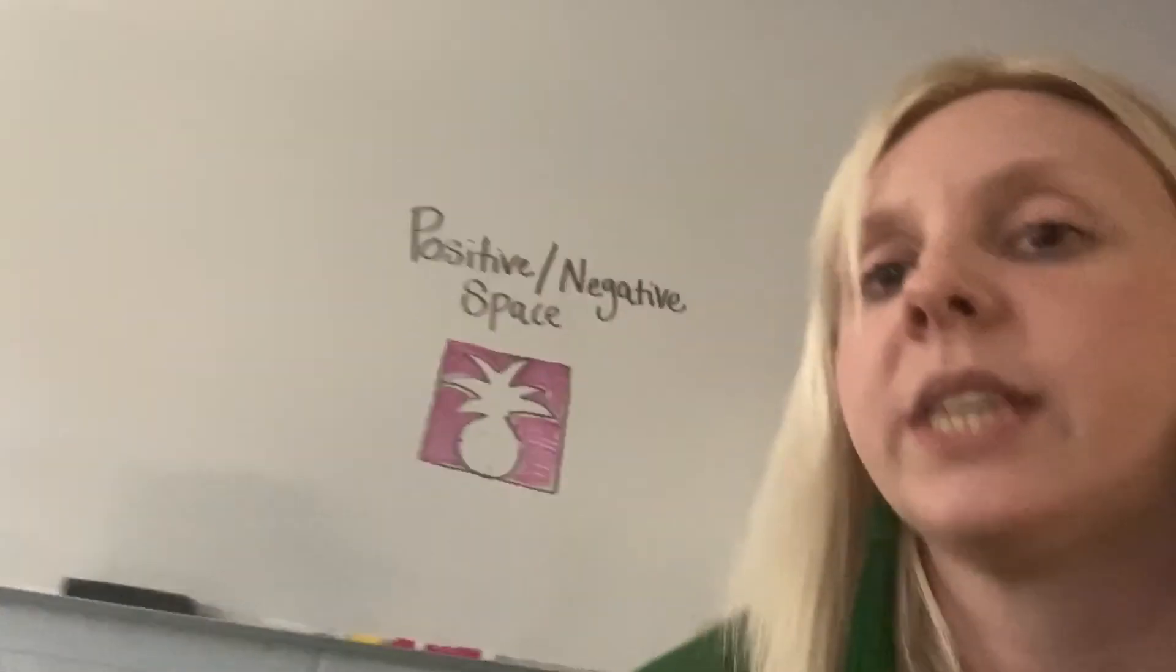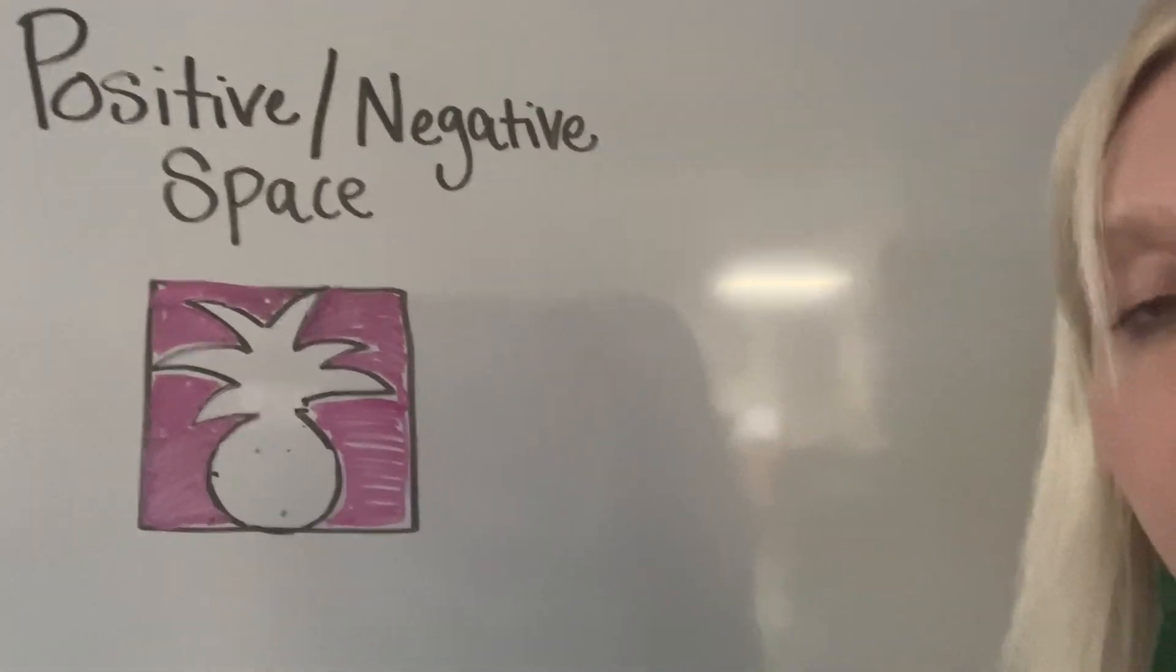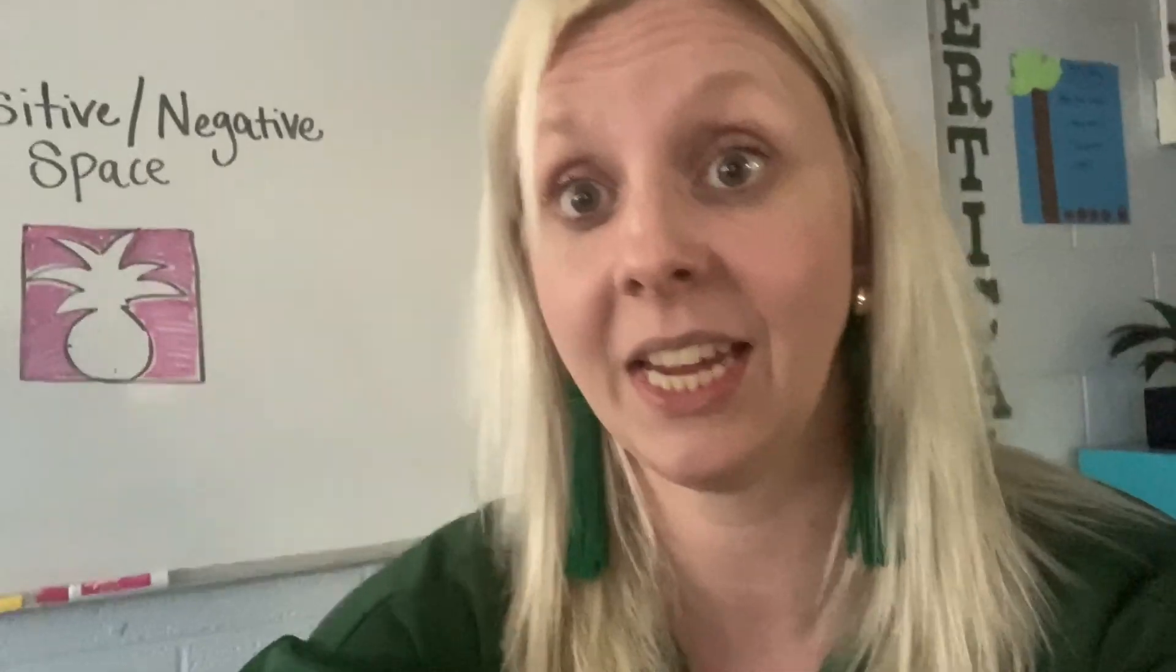And I want you to notice, I'm going to hold this kind of close here, how it almost creates a shape back in the back. When you think about positive and negative space together, it makes it easier to draw because you're looking at two things. You're looking at the shapes in the background, and you're looking at the subject itself. And a lot of times we've learned to just look at the subject, but it helps to work on both at the same time.